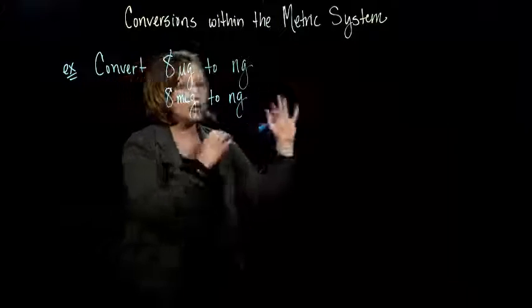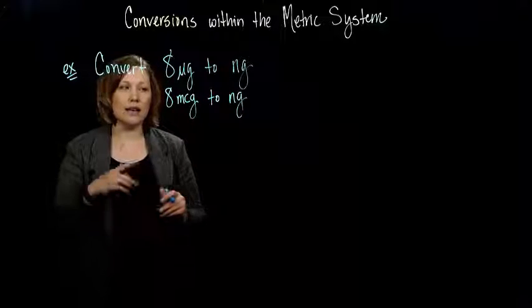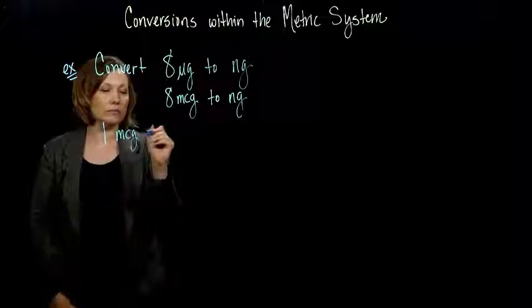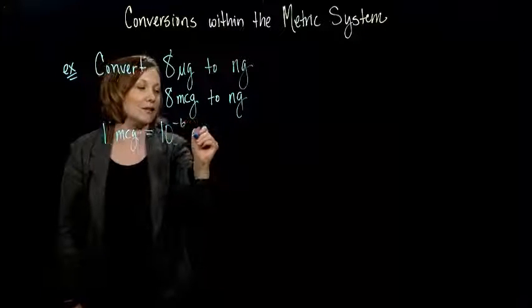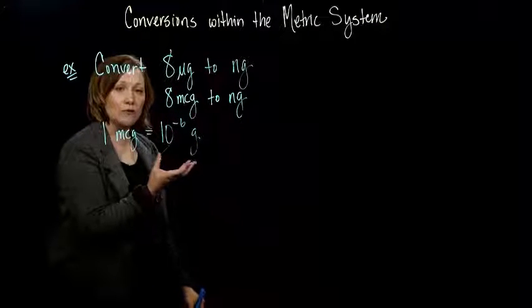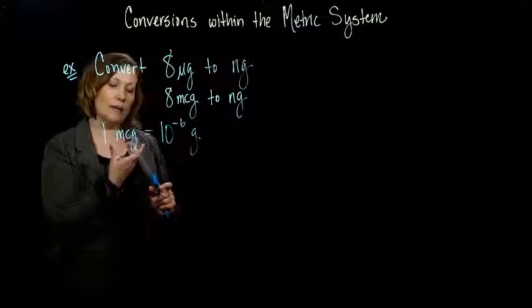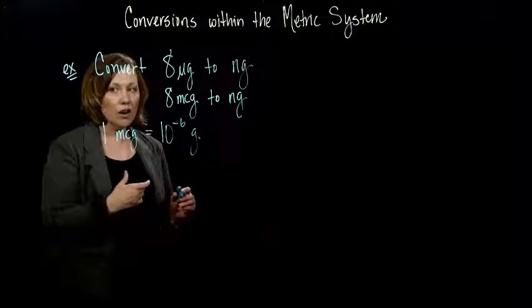If you pull up your chart and you look, we see that one microgram is equal to 10 to the negative 6 grams. Because grams is our basic unit of measure for weight. If it says 10 to the negative 6 in that column, that means one microgram is 10 to the negative 6 grams.